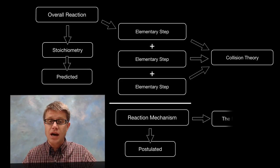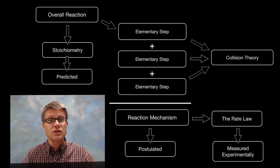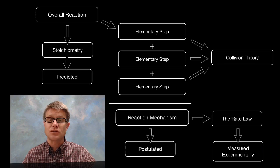In other words, we can't predict what's going to happen. We can only measure it. And so the rate law can be measured experimentally. But each of those steps have to be figured out. And that's what chemistry does.